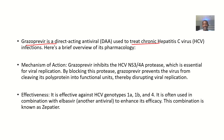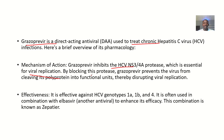It is mostly used to treat chronic Hepatitis C virus infections. Since it is direct acting, it has an effect on stopping the virus from making copies of itself. It inhibits the Hepatitis C virus NS3 and NS4A protease, which is an enzyme essential for viral replication. By blocking the protease, Grazoprevir prevents the virus from cleaving its polyprotein into functional units, so there will be no functional units and no replication.